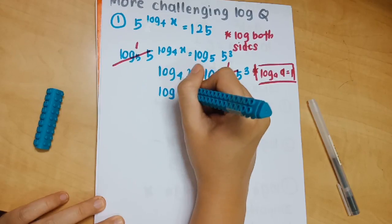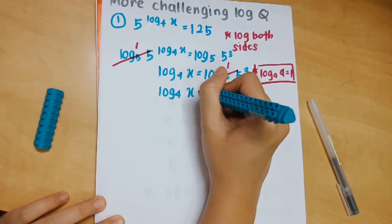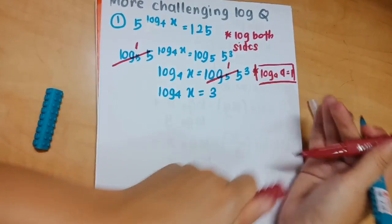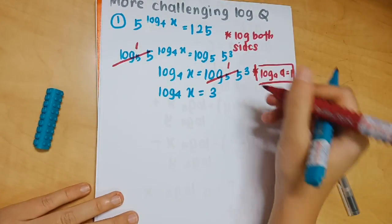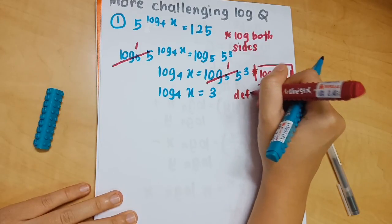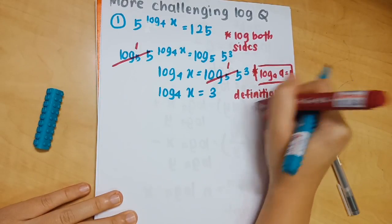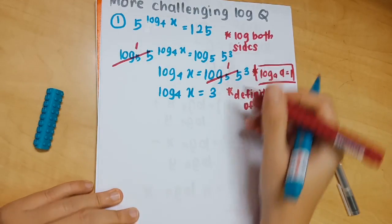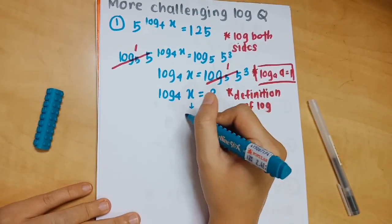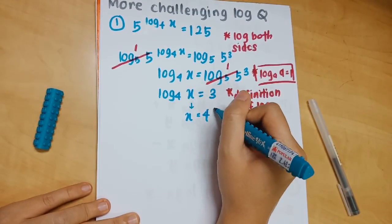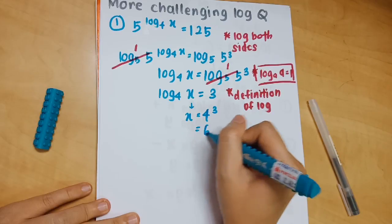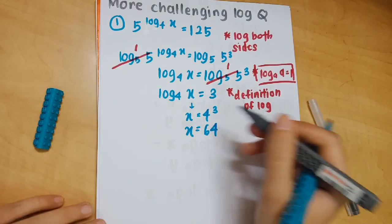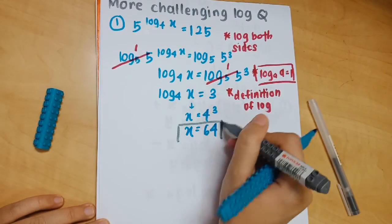Now copy the equation again: log_4(x) = 3. You solve this using the definition of logarithm. The one in the middle, x, is the king — it remains the same. The small 4 becomes big, so it becomes the base: 4. The big 3 becomes small, so you get 4 to the power of 3. Your final answer is x = 64.